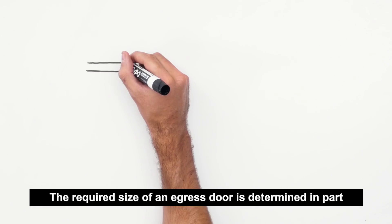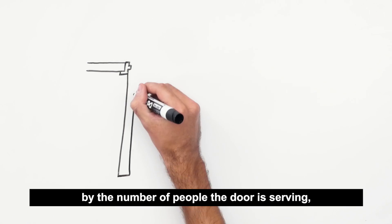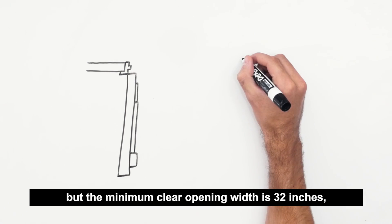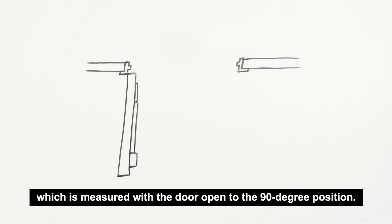The required size of an egress door is determined in part by the number of people the door is serving. The minimum clear opening width is 32 inches, which is measured with the door open to the 90 degree position.